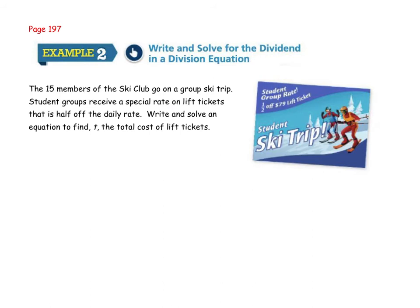In example 2, we're going to write a division problem. We have the 15 members of the ski club go on a group ski trip. Student groups receive a special rate on lift tickets that is half off the daily rate. We're going to write and solve an equation to find t, the total cost of the lift tickets. Well, we don't know what that total cost is, but we know that we're going to use t to represent it. And we know we have to divide that by 15. And then we are told that that amount is going to be half off that lift ticket price. Well, half of 79, which I'm seeing in this picture, is $39.50. So our total cost divided by the number of students will equal half of that lift ticket price.